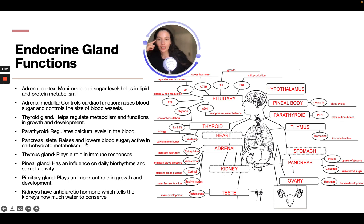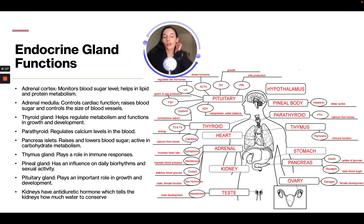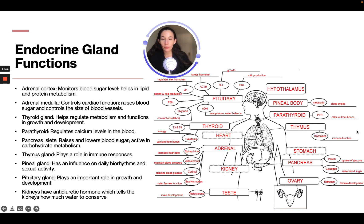The pancreas raises and lowers blood sugar and is activated in carbohydrate metabolism. Looking at the pancreas in the diagram, it releases both insulin and glucagon. Insulin leads to the uptake of glucose, while glucagon raises blood sugar. The thymus gland plays a role in the immune response — it releases thymosins, which are related to immune function.